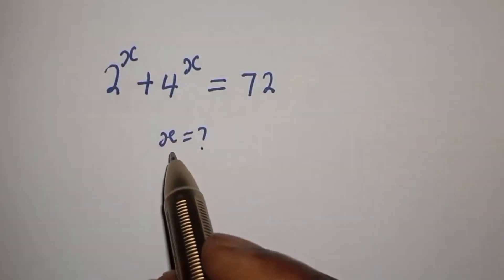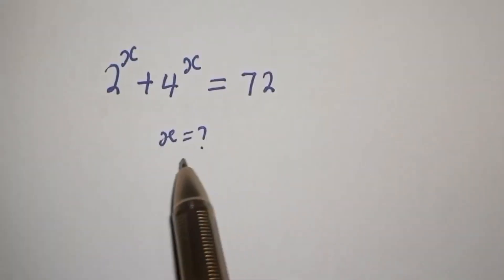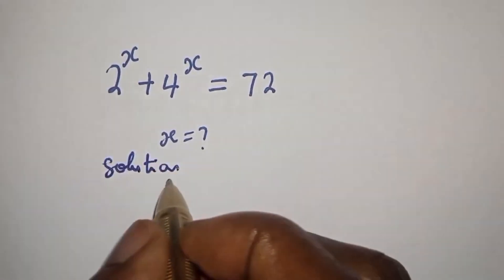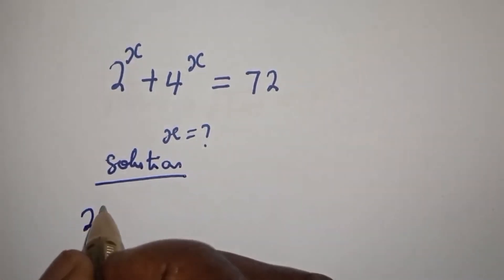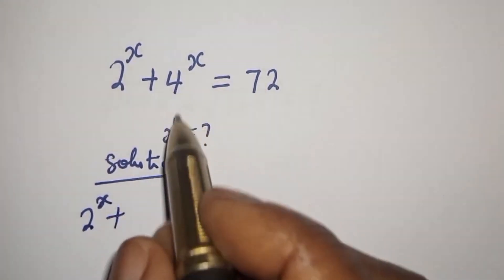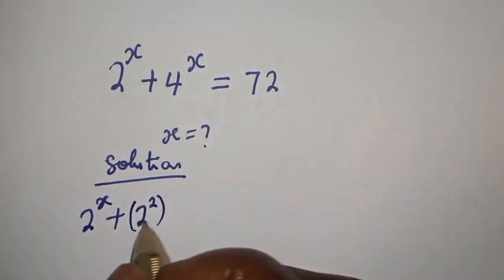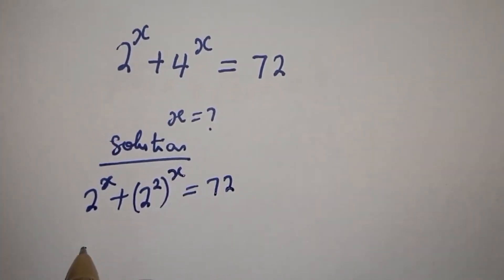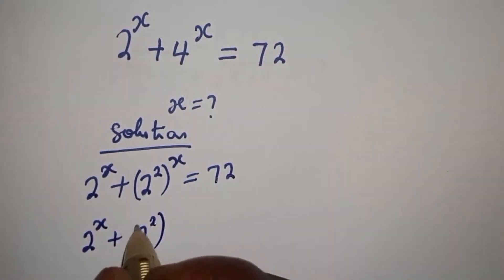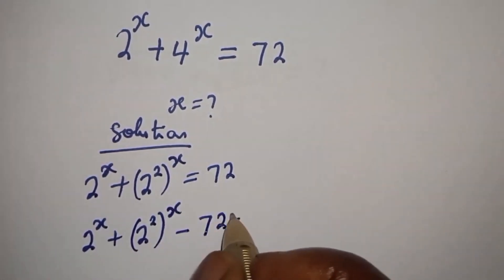Hello, where to find the value of s from this equation: 2 raised to power s plus 4 raised to power s is equal to 72. Solution: 2 raised to power s plus 4 raised to power s can be written as 2 squared raised to power of s, is equal to 72. Then, 2 raised to power s plus 2 squared raised to power of s minus 72 is equal to 0.